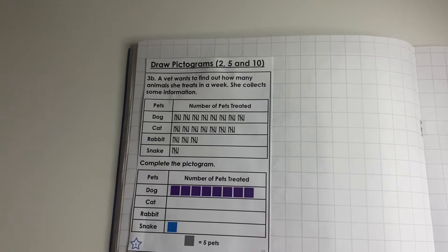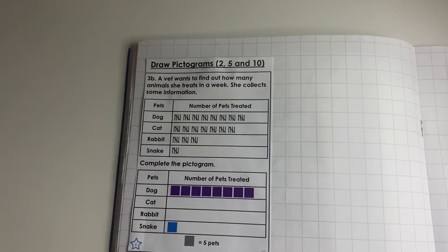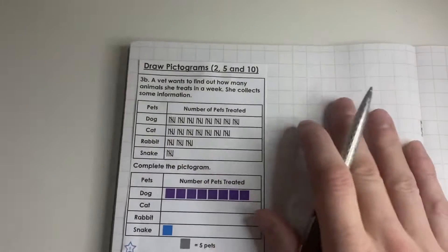Today we're going to be looking at drawing pictograms again, but this time we're going to be using the two times table, the five times table, and the ten times table to help us.